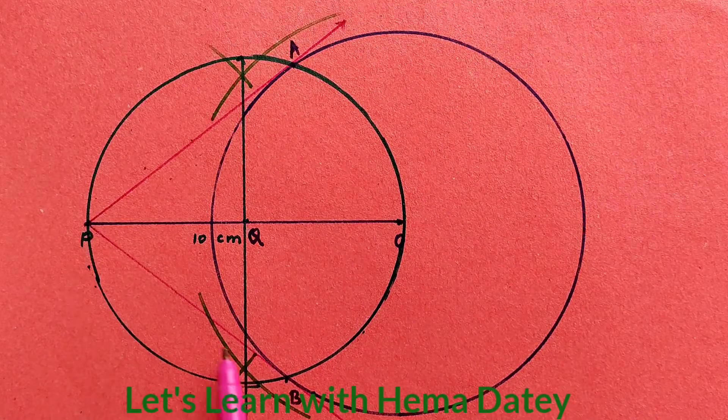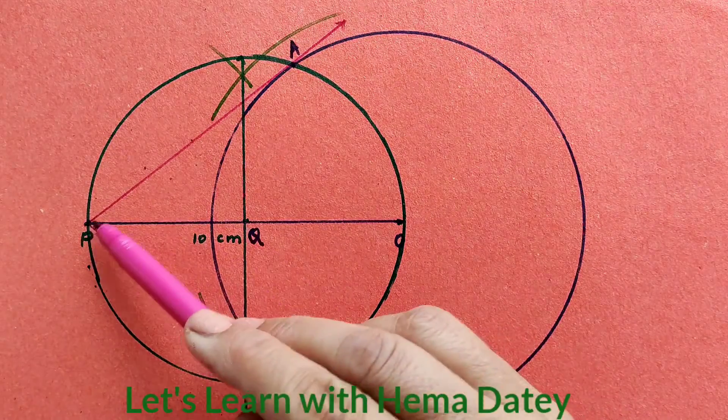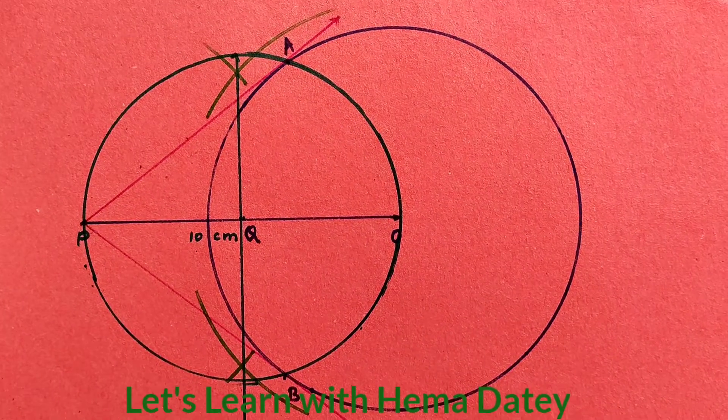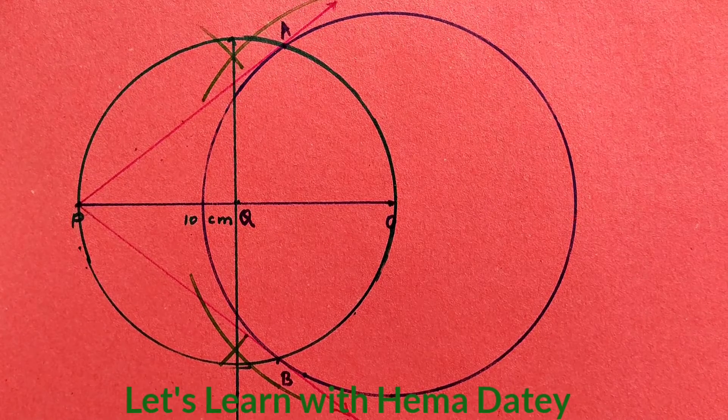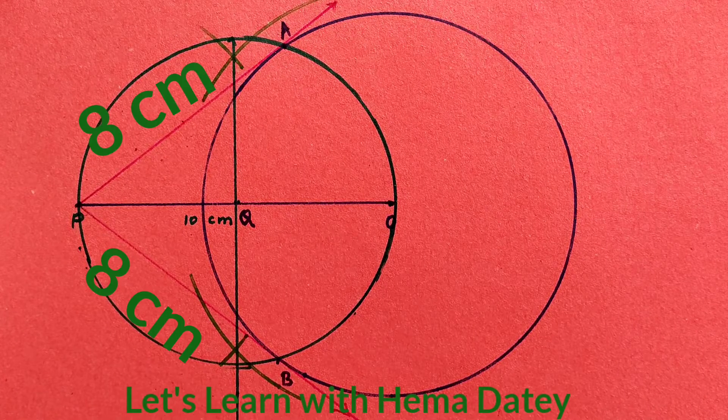Here we have got two tangents PB and PA and this is the required construction. Both the tangents PA and PB are equal and each of them is 8 cm.